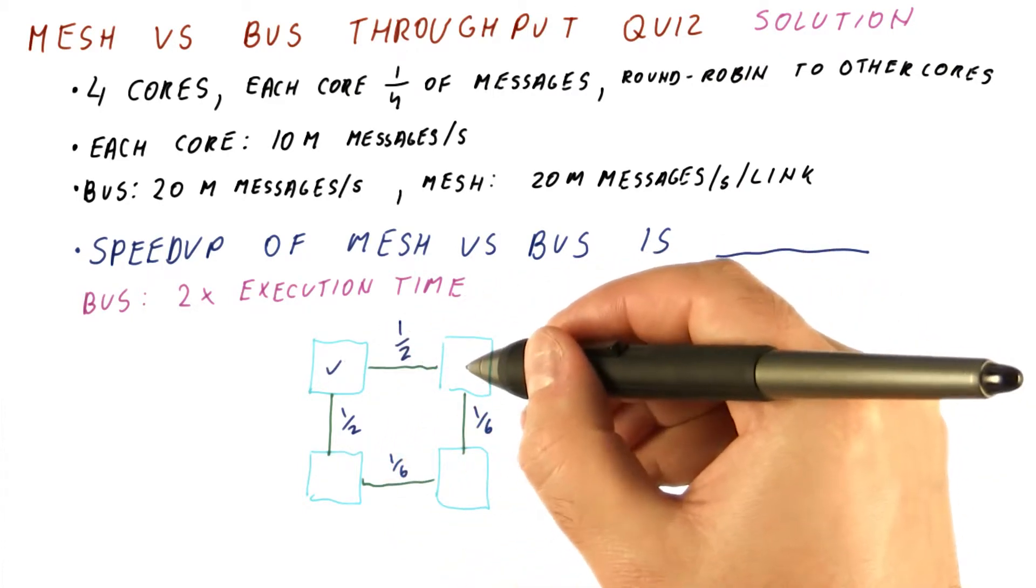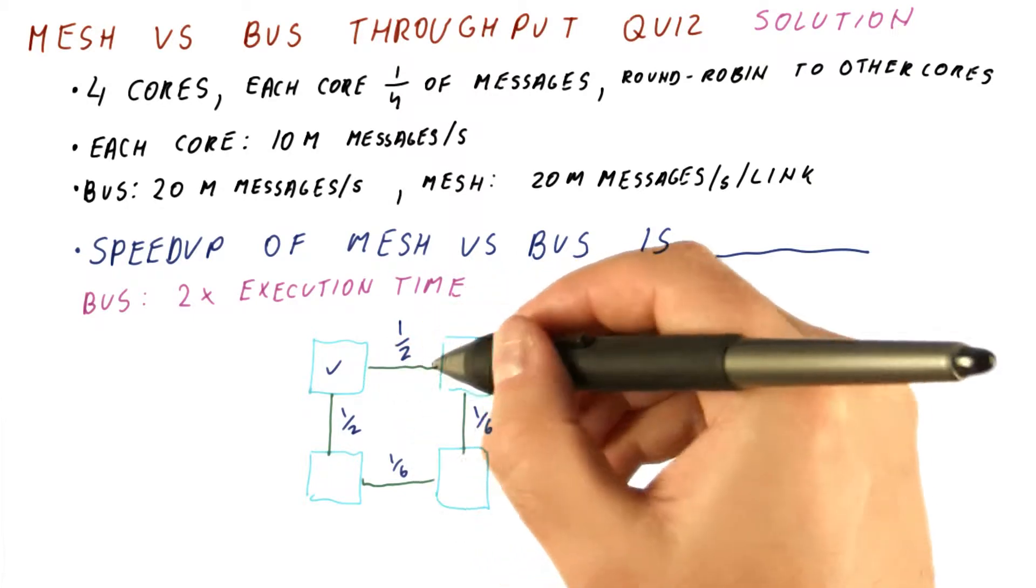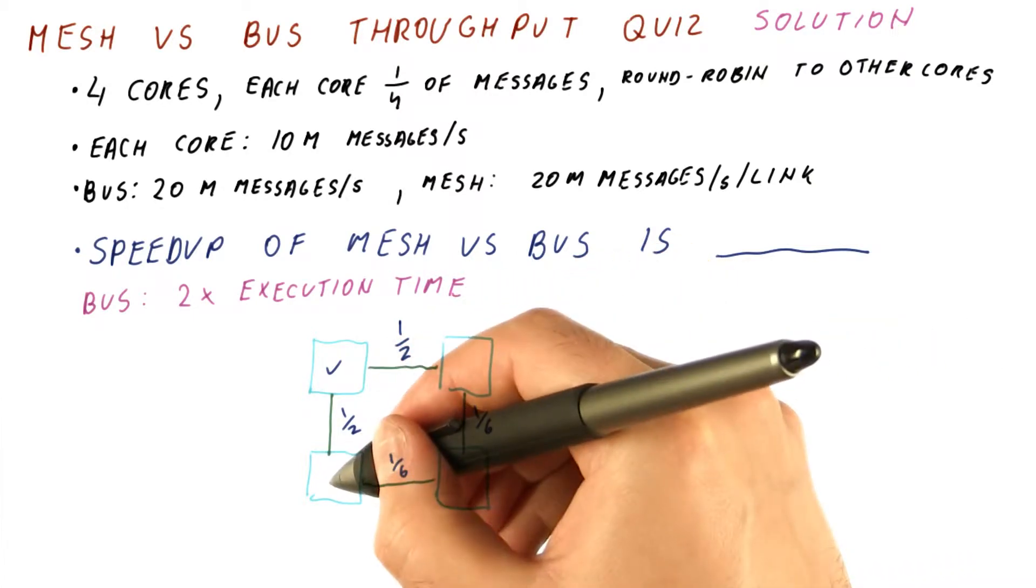What happens from this core? Same thing. This link gets one half of the messages. One third are going here, one sixth are going here.